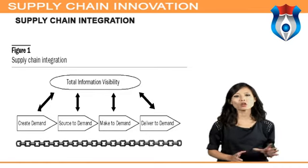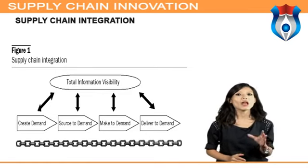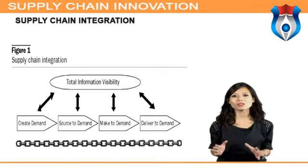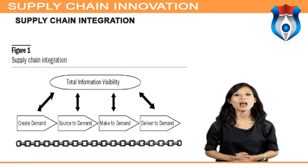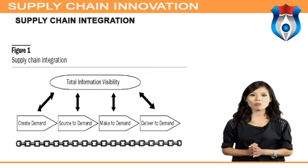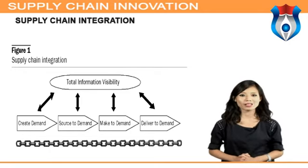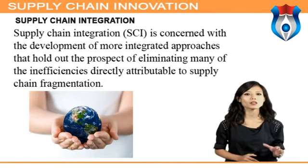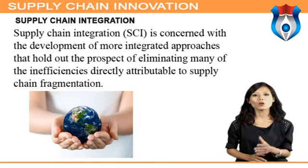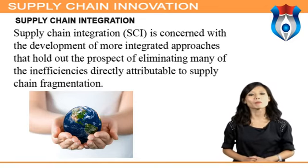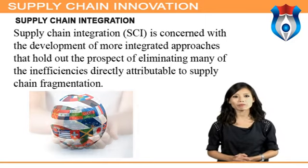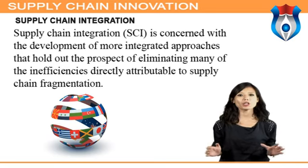Integration in context refers to the extent to which various supply chain activities and processes work together in as seamless a manner as possible. It has long been recognized that traditionally managed businesses and supply chains, often characterized by high levels of fragmentation, have failed to achieve their true potential in terms of profitable growth and meeting customer expectations. Supply chain integration, or SCI, is to a great extent concerned with the development of more integrated approaches that hold out the prospect of eliminating many of the inefficiencies directly attributable to supply chain fragmentation.